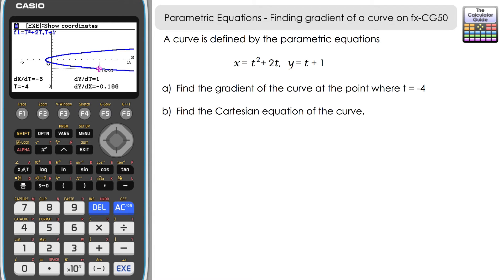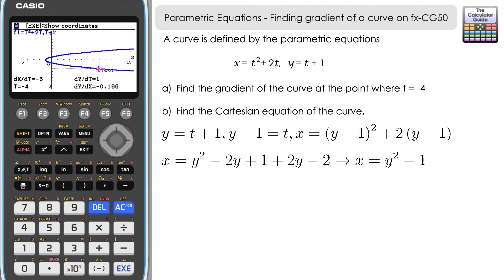To find the Cartesian equation, rearrange one parametric equation to make t the subject and substitute into the other. Starting with y: y equals t plus 1 rearranges to t equals y minus 1. Substitute into x: x equals (y minus 1) squared plus 2(y minus 1). Expanding: x equals y squared minus 2y plus 1 plus 2y minus 2, which simplifies to x equals y squared minus 1, giving y equals the square root of x plus 1.